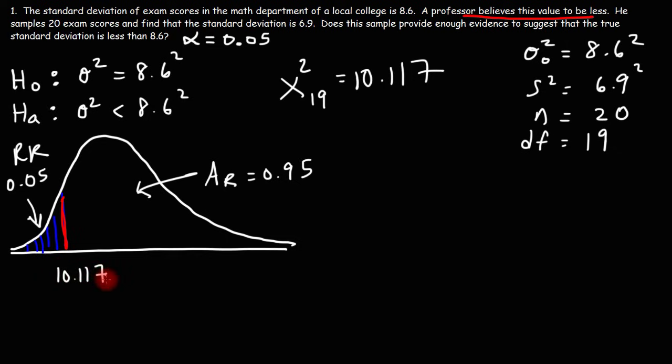Now our next step is to find our calculated chi-square value based on our sample. Here's the formula we're going to use to get that answer: it's equal to n minus 1 times the sample variance divided by the population variance, and we're going to use the hypothesized population variance.